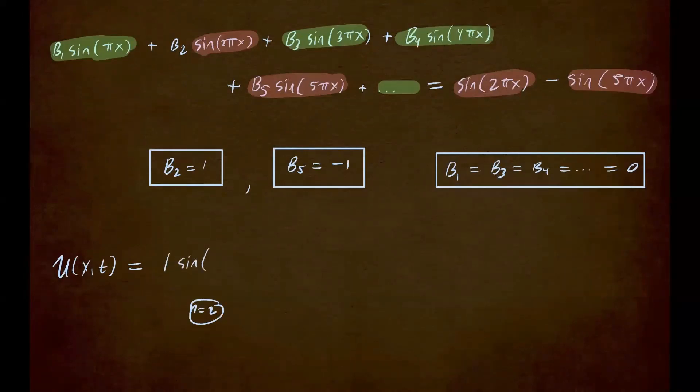So we'll have b sub 2, that's 1, times sine of 2 pi x times the exponential, negative 100 square—n square. So n is 2 in this case, so we're going to plug that in,